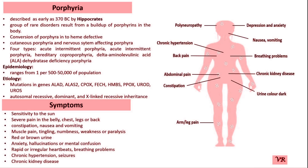Each type of porphyria is associated with mutations in specific genes that encode enzymes involved in heme synthesis, such as hydroxymethylbilane synthase, uroporphyrinogen decarboxylase, coproporphyrinogen oxidase, protoporphyrinogen oxidase, and ferrochelatase.